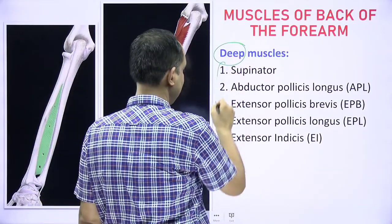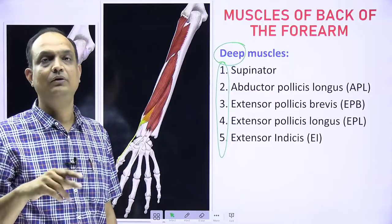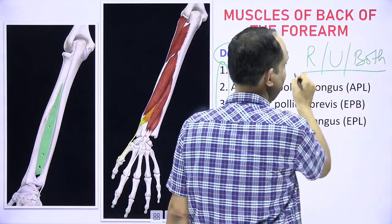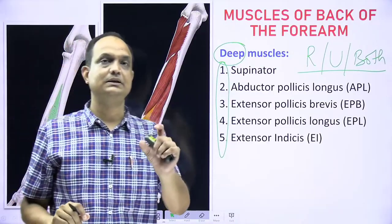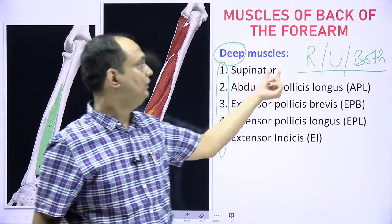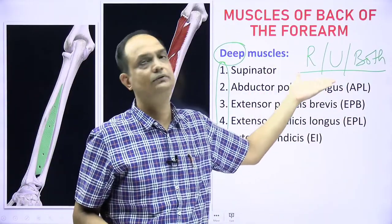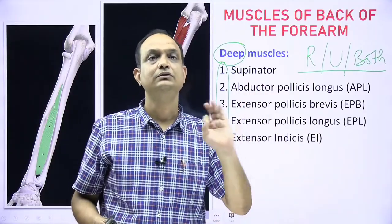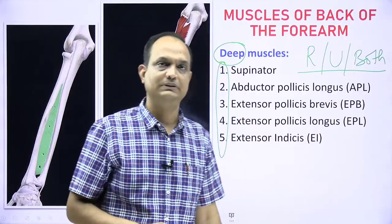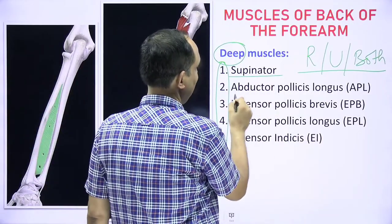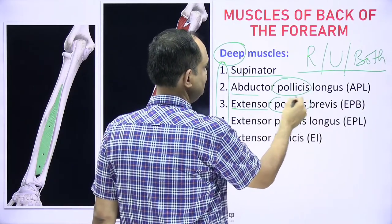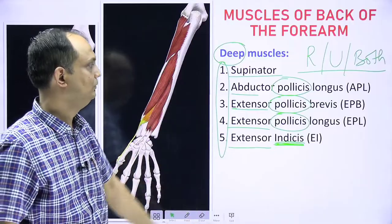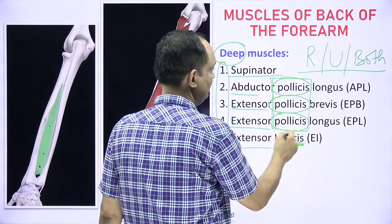When you remove these seven superficial muscles from the posterior surface of the radius and ulna, you then find the actual deep muscles of the forearm, which do arise from the radius, ulna, or both. There are five deep muscles: supinator, abductor pollicis longus, extensor pollicis brevis, extensor pollicis longus, and extensor indicis. Three of these are directly related to thumb movement.